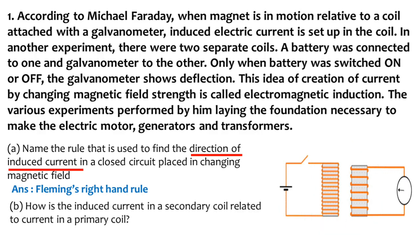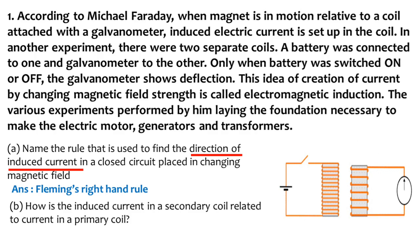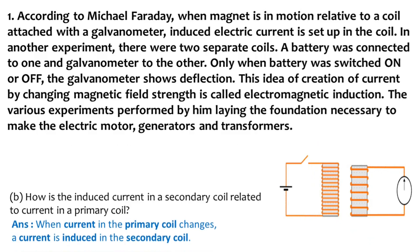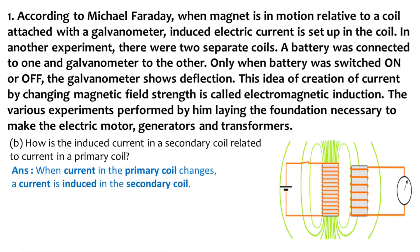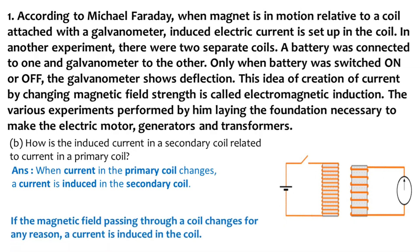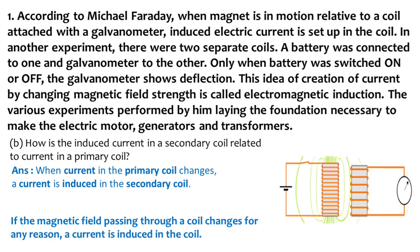Next question: how is the induced current in a secondary coil related to current in a primary coil? A momentary deflection is seen in the galvanometer connected to the second coil when the switch of the first coil is put on or off. Whenever the switch is put on, current flows through the first coil creating a magnetic field, which induces a current in the second coil. Similarly, when the switch is put off, there is a change in the magnetic field, which again induces a current in the second coil. So the answer is: when current in the primary coil changes, a current is induced in the secondary coil.